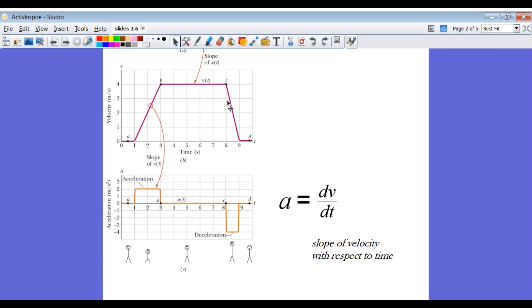Over here, the deceleration goes from 4 to 0, but now it only does it in one second. So the acceleration is twice the magnitude of this acceleration, but it's negative of course. So we have negative 4 for our acceleration over here. Negative acceleration is oftentimes called deceleration when the object is slowing down.